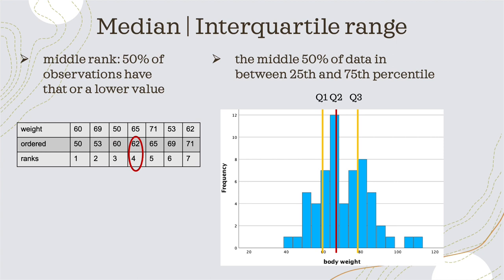What does the median actually mean? It means that at this data point, 50% of observations have that value or a lower value.